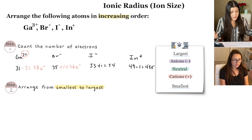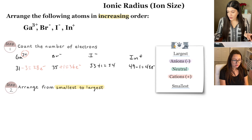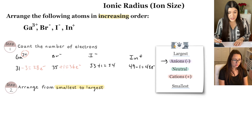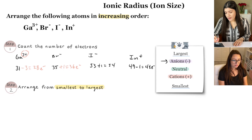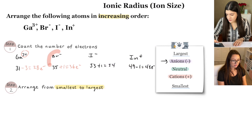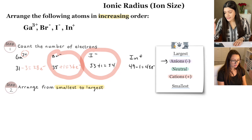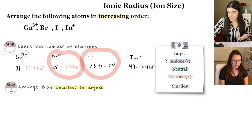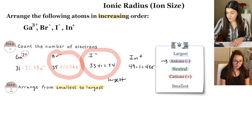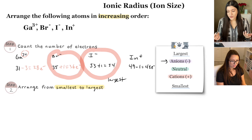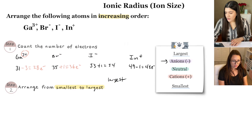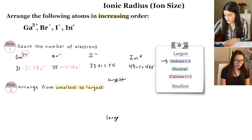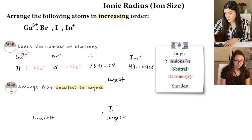Since all electron counts are different, we apply our rules. Anions are the largest, so I look at the two anions — bromine and iodine. Iodine has more electrons, so it's the largest overall. Arranging from smallest to largest, iodine is at the end as the largest, and bromine is the second largest.